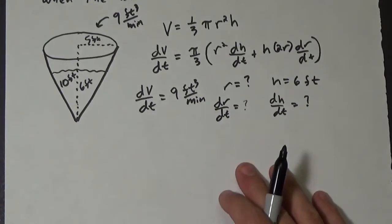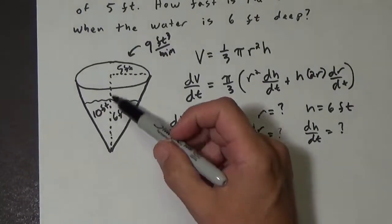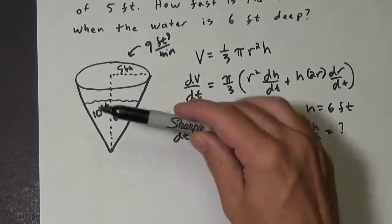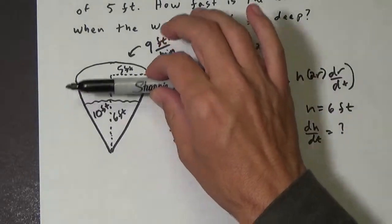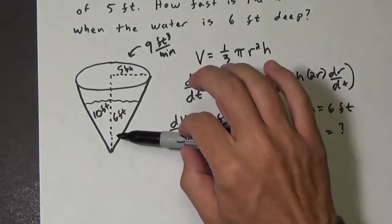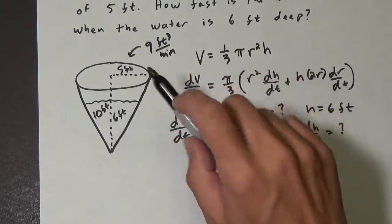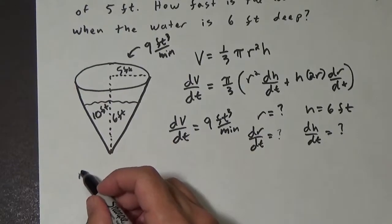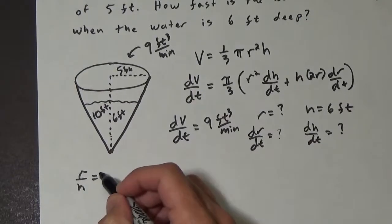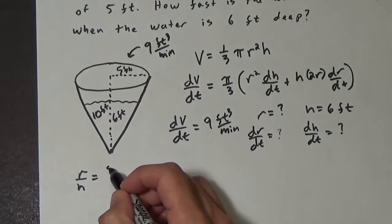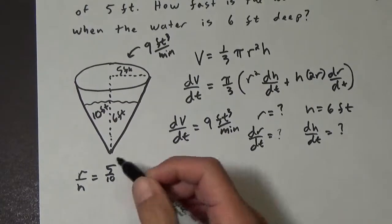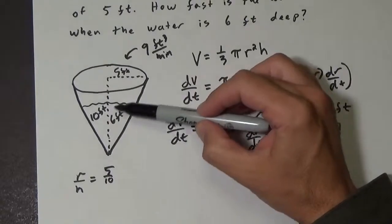And so that information is gonna come from the idea that when you have a cone, based on the radius and the height of the cone, as this water level is rising, the ratio of r to h must stay the same. So we know that the ratio of r to h is always gonna be 5 over 10. So that ratio is always gonna stay the same.